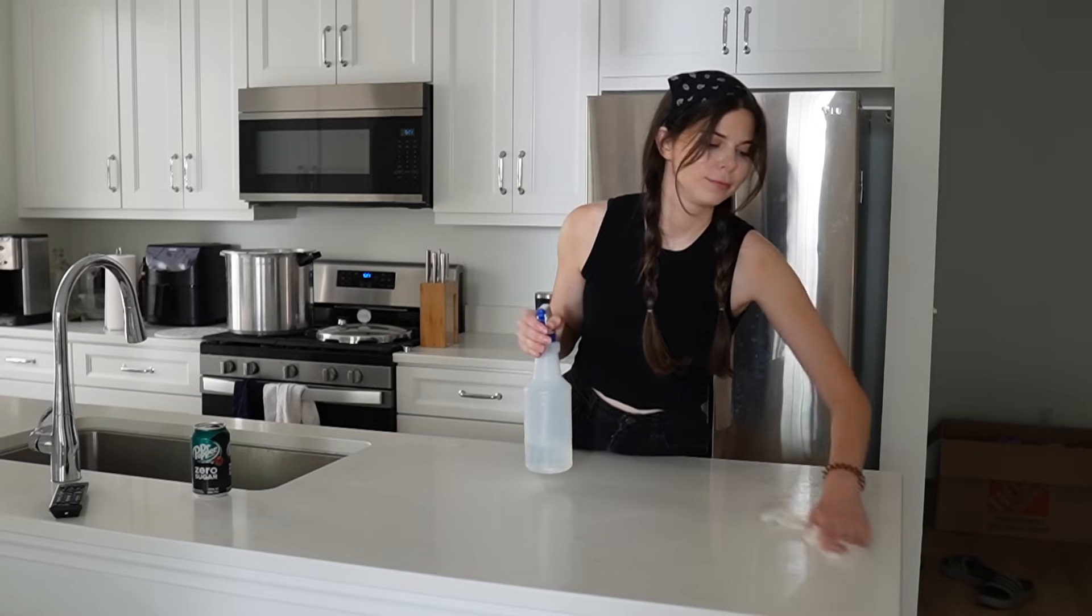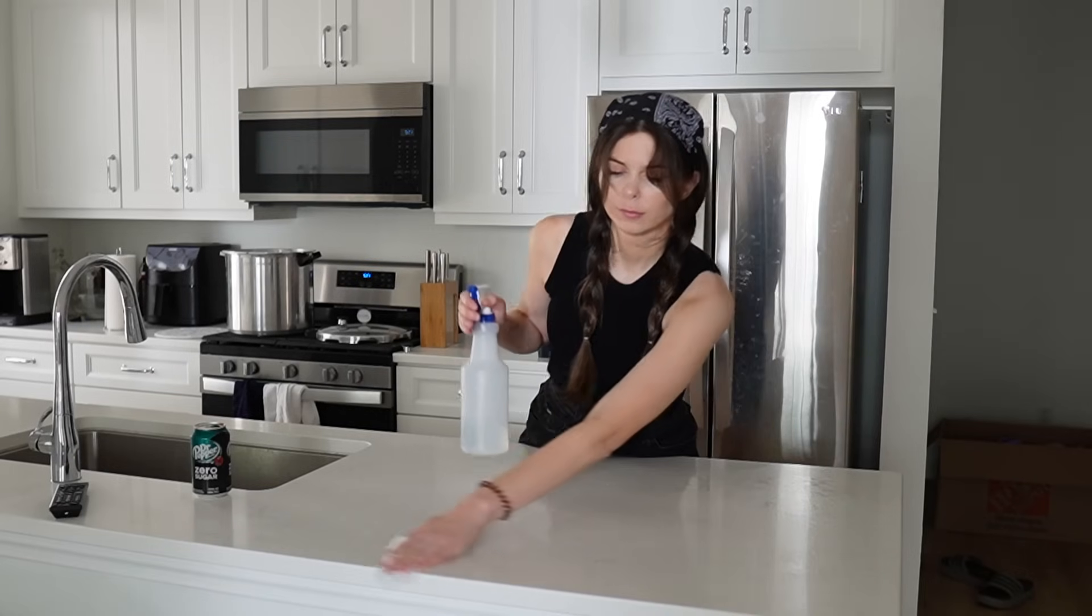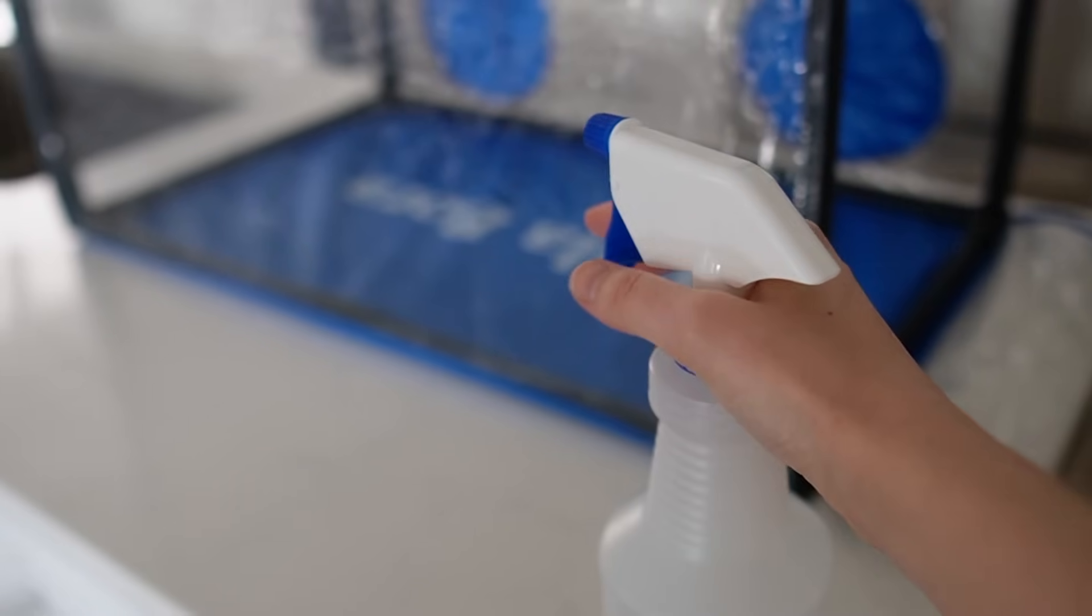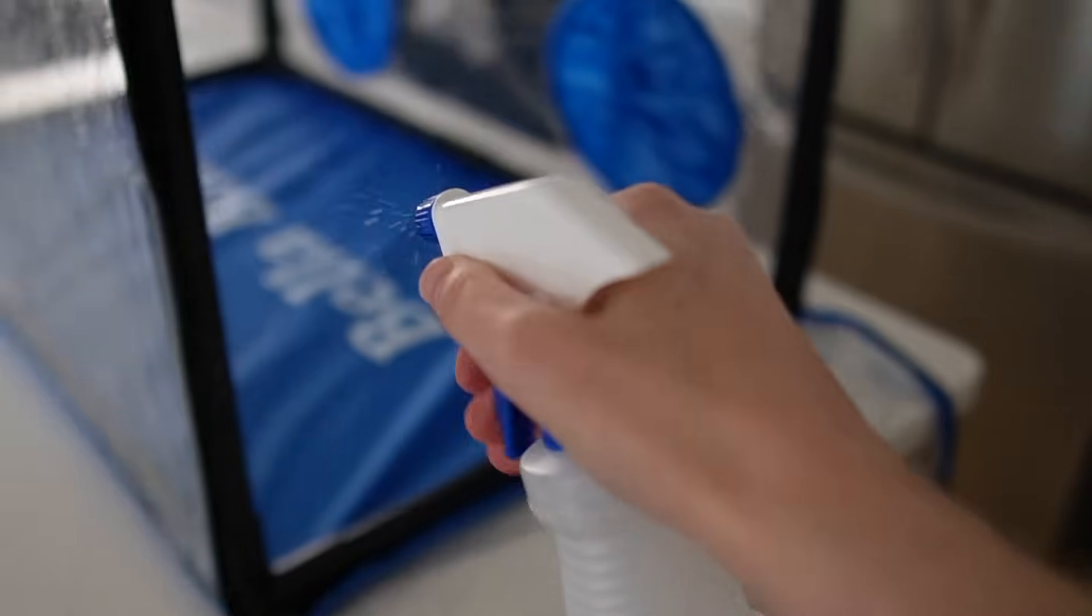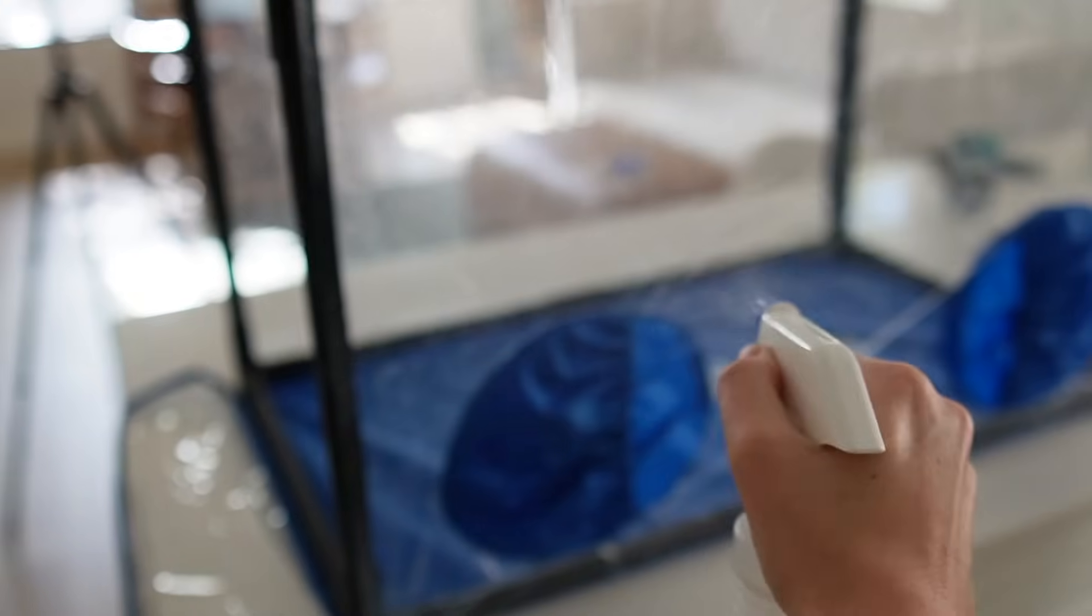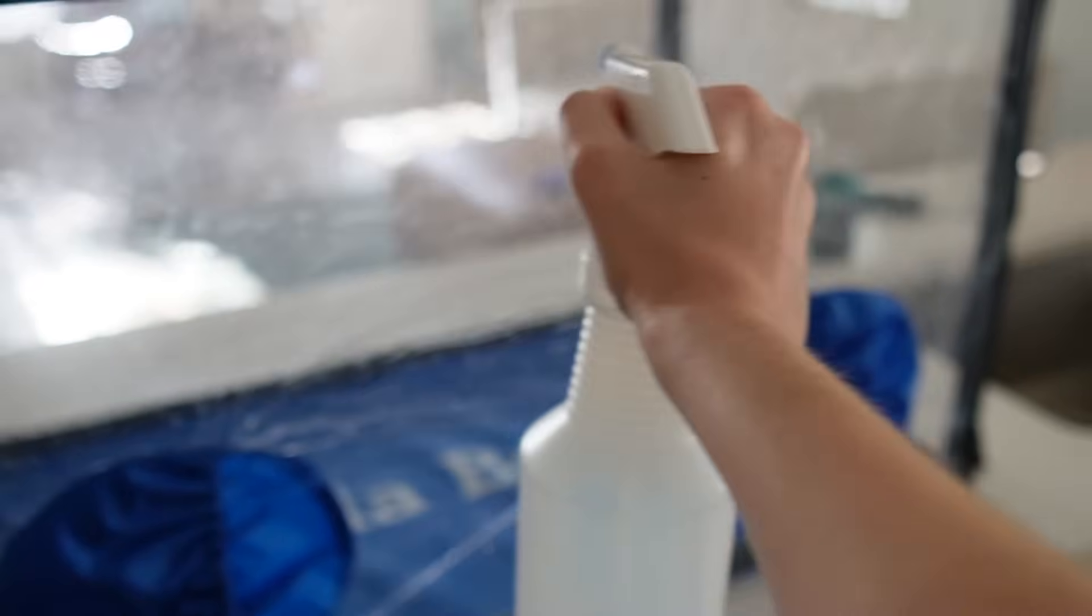Today, I'm using a still air box that has been completely sprayed down inside and out with 70% isopropyl alcohol. After cleaning the still air box, it's best to wait 15 to 20 minutes before using it so that the alcohol has enough time to disinfect the surfaces. If you listen very closely, you can hear the bacteria screaming for their lives.